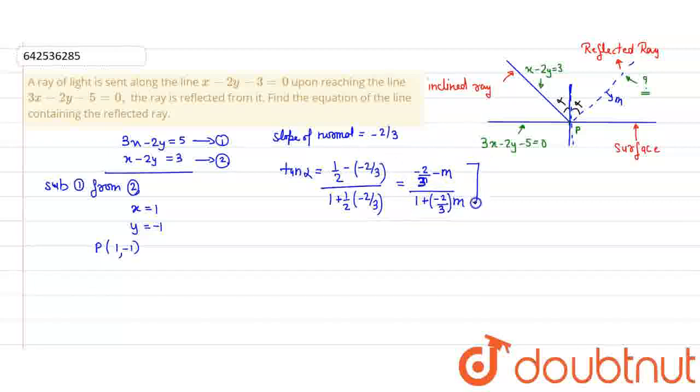Now, we will solve our equation. We get 7/6 upon 2/3 equal to minus 2/3 minus m upon 1 minus 2/3 m. When we simplify this, we get m is equal to 29/2.